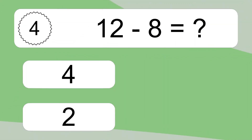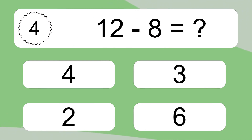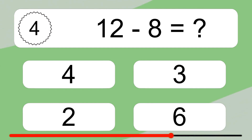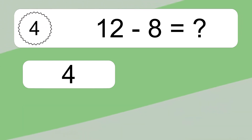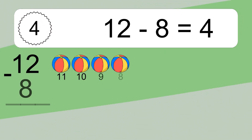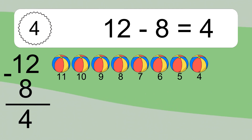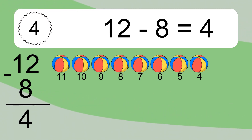12 minus 8 equals what? 12 minus 8 equals 4. Let's count it. 11, 10, 9, 8, 7, 6, 5, 4. 12 minus 8 equals 4.